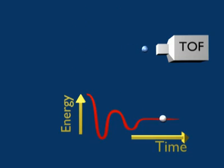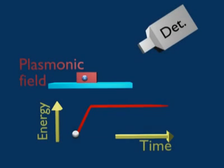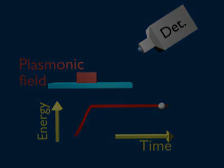A different situation occurs when the plasmonic field has a typical dimension of few nanometers. Now the electron escapes from the enhanced field in a time shorter than the laser period, and its energy does not oscillate. The electron energy just quickly jumps to its final value that is then detected.